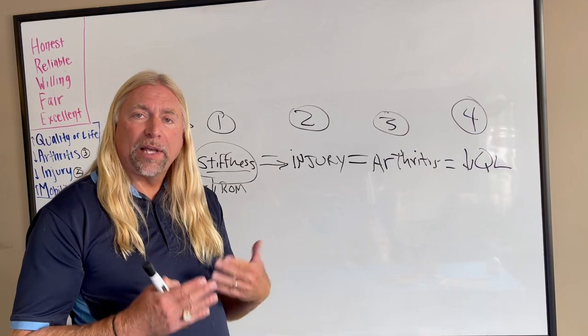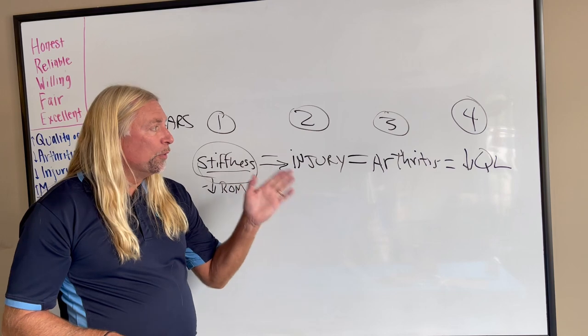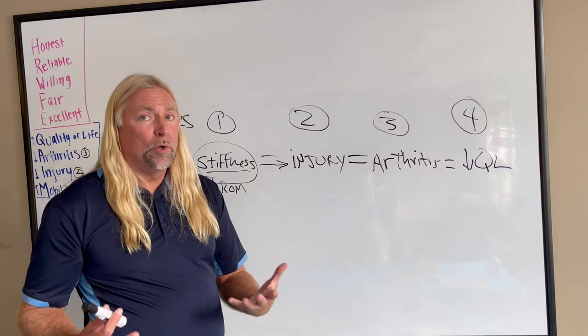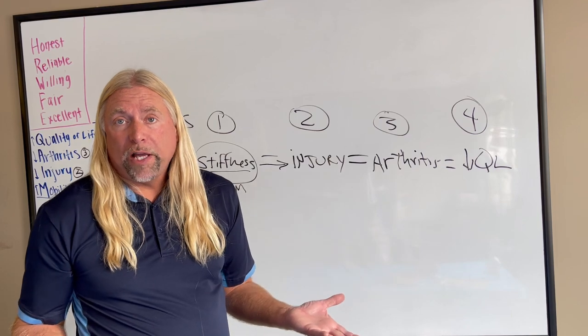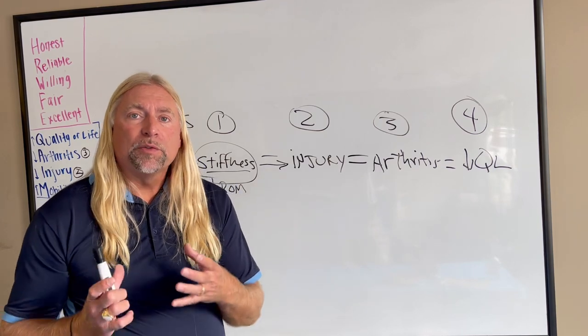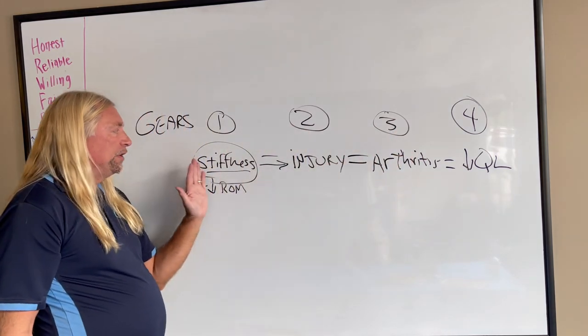When you have injuries that happen over and over again, what do you think your odds of arthritis is? Up. When you get arthritis and degeneration, what do you think that's going to do to your ability to do things when you're older and your overall quality of life? That's what you need to say or similar things like that, that walk them through the phases every time.